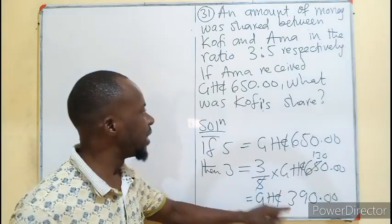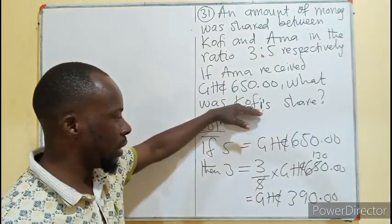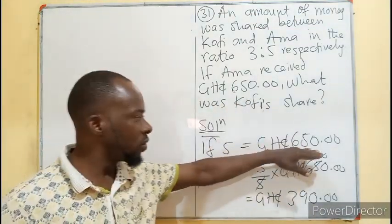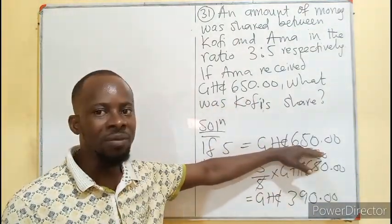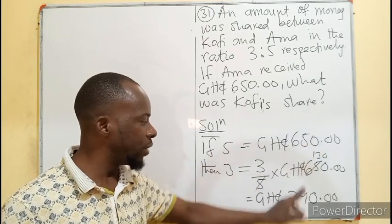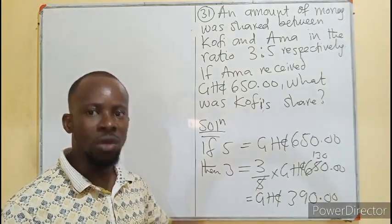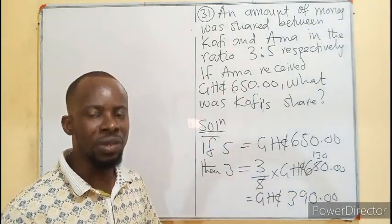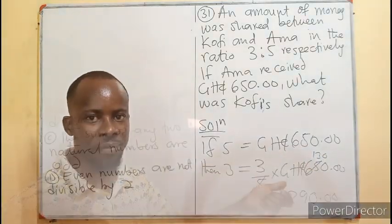So if you multiply these together, you will end up having 390 Ghana cedis. This is the amount that Kofi will be receiving, whilst Ama received 650. If you add the two, you will have the total amount they are sharing.